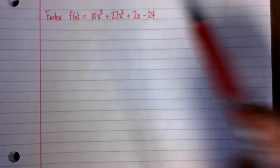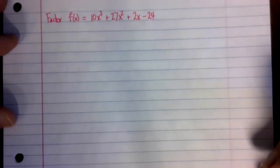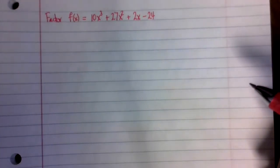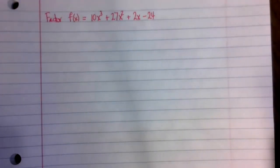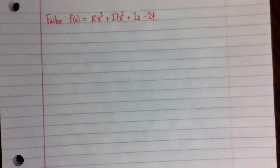In this video, we're going to talk about how to factor this polynomial f(x) = 10x³ + 27x² + 2x - 24. This is a cubic polynomial. There's no easily usable formula for solving cubics. There actually is a formula, but nobody ever learns it because it's so incredibly complicated.